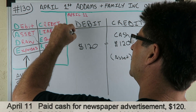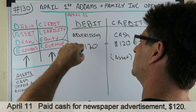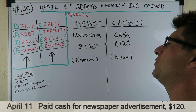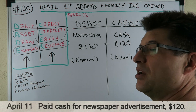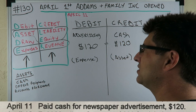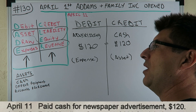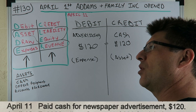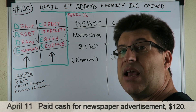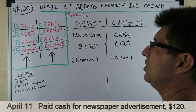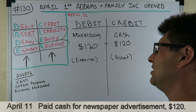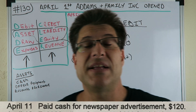So advertising — that's an expense. Does that make sense? If you have an expense increasing in value — say you didn't have anything in the advertising category and now advertising is going up — you've figured out advertising is an expense and it's going up in value. If an expense is increasing in value, it's a debit. So that makes sense here.